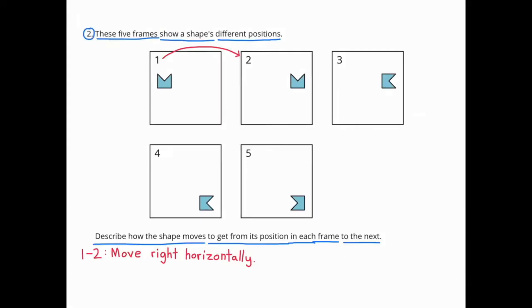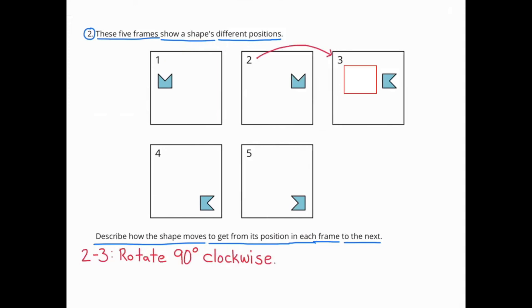From frame 1 to frame 2, the shape moves to the right horizontally. From frame 2 to frame 3, the shape rotated 90 degrees clockwise.